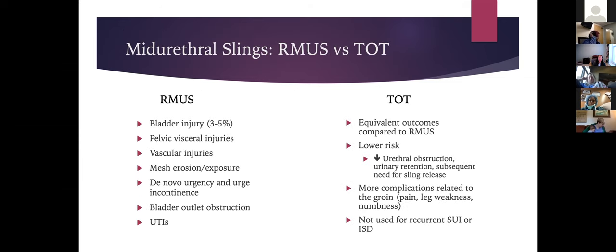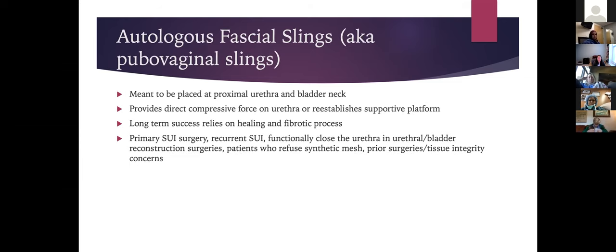In practice, most surgeons use what they're most comfortable with. I generally use retropubic mid-urethral slings because I do more of them and am more comfortable with them. I've also had more patients complain of groin pain and discomfort with transobturator slings.